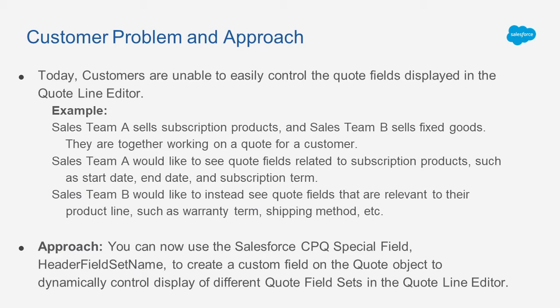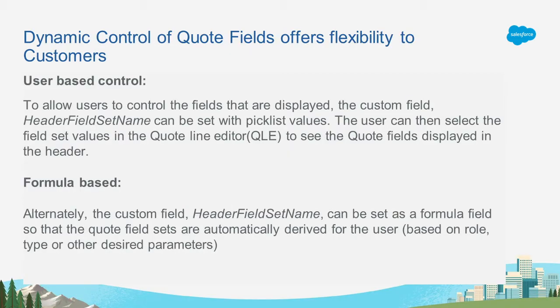In our example here, we have two sales reps working on the same Quote and would like to see a different set of fields. We are introducing an approach that is already consistent in the Quote Line Editor list view. A new special field called HeaderFieldsetName is being introduced that will help manage display of fields in your Quote Field Sets. Customers can choose a few different ways to use this special field to dynamically control Quote Fields display.